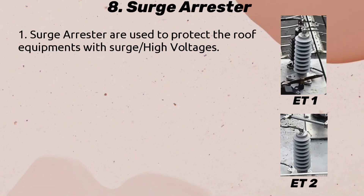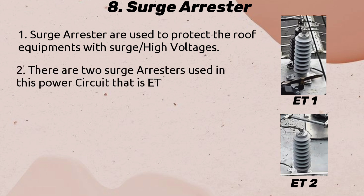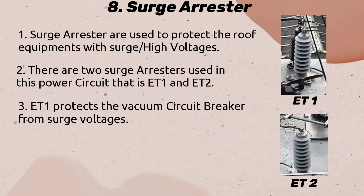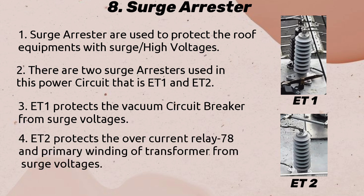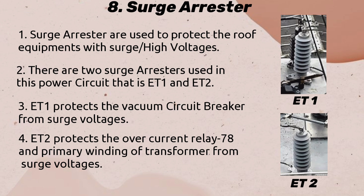Surge Arrester: Surge arresters are used to protect the roof equipment from surge high voltages. There are two surge arresters used in this power circuit: ET1 and ET2. ET1 protects the vacuum circuit breaker from surge voltages. ET2 protects the overcurrent relay and the primary winding of the transformer from surge voltages.